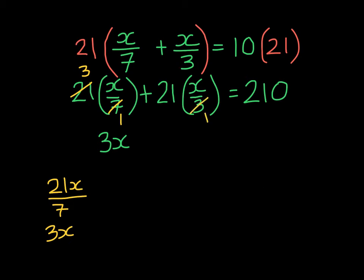3 goes into 3 once, and 21 divided by 3 is 7, so I get 7x. If you want to see how that works on the right-hand side: 21 times x, and then I have 3 in the denominator — that would be simplified to give 7x.